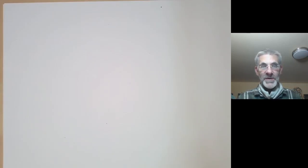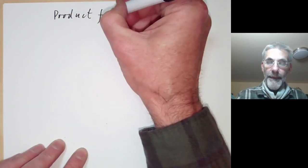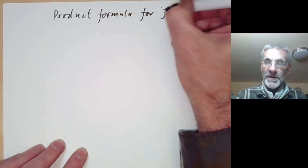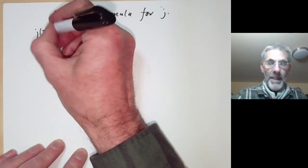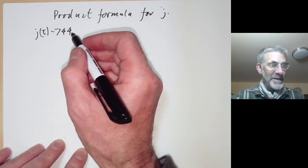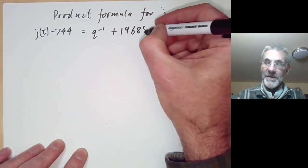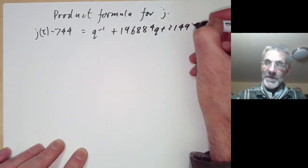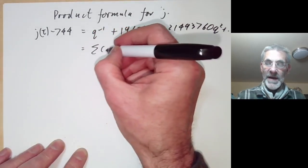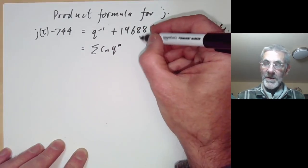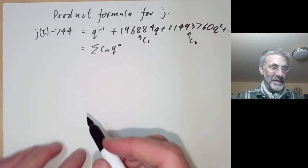This talk is part of a series of lectures on modular forms and will be about the product formula for the elliptic modular function j. We recall that j(τ) has a rather complicated expansion: if we subtract the constant term 744 it becomes q^{-1} + 196884q + 21493760q² + even bigger numbers. We write that as the sum of c(n)q^n, so c(1) = 196884, c(2) = 21493760, and so on.